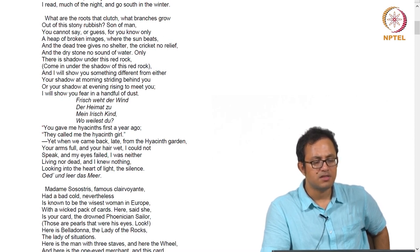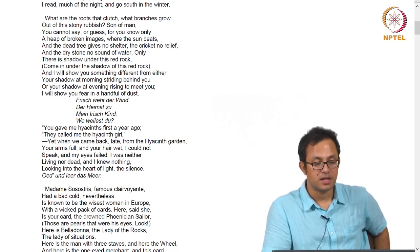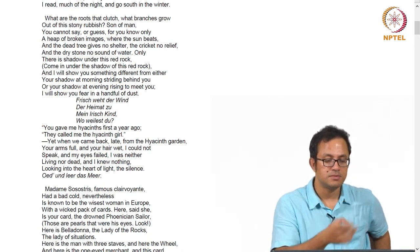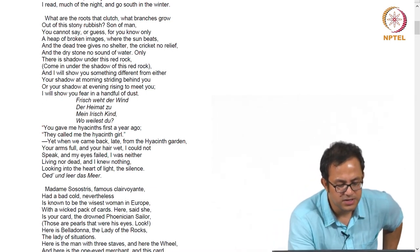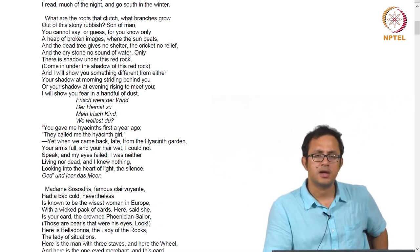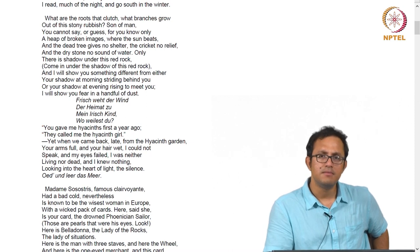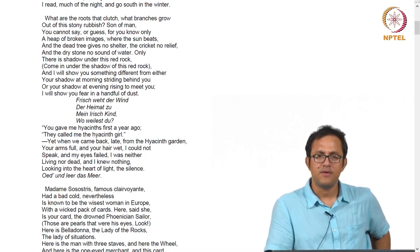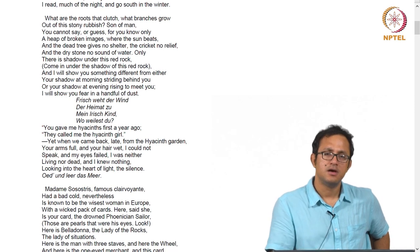'Your arms full and your hair wet, I could not speak and my eyes failed, I could not — I was neither living nor dead, and I knew nothing.' There is a quotation from German. The whole idea of living between existence and non-existence — it is a very liminal location between life and death, a very limbo state. That reminds us of Dante and the different circles of heaven and hell in Dante's Divine Comedy, which Eliot is constantly referring to. Being stuck between life and death, unable to move, is something which we see in this particular poem.